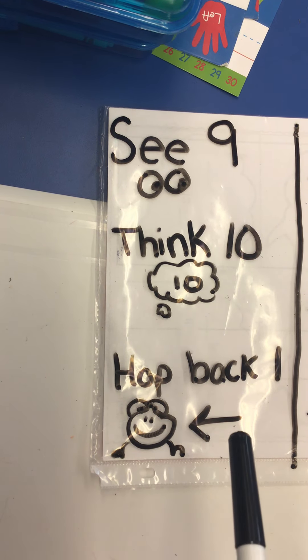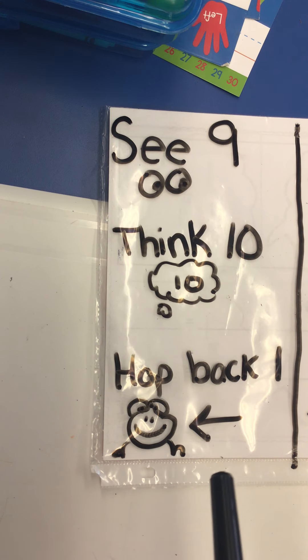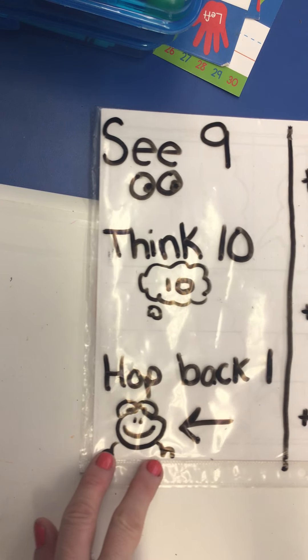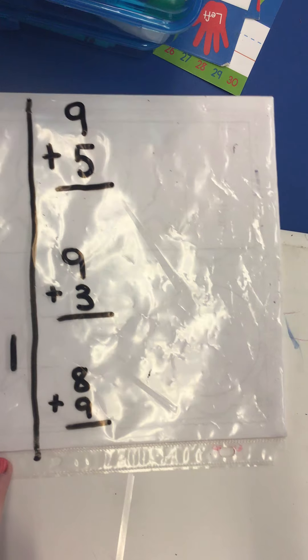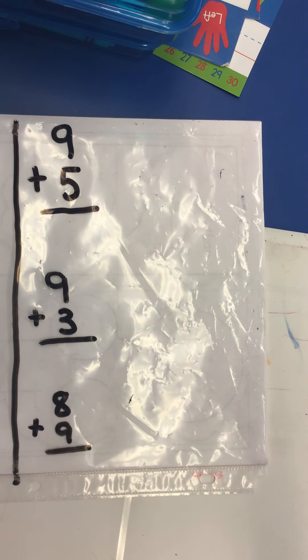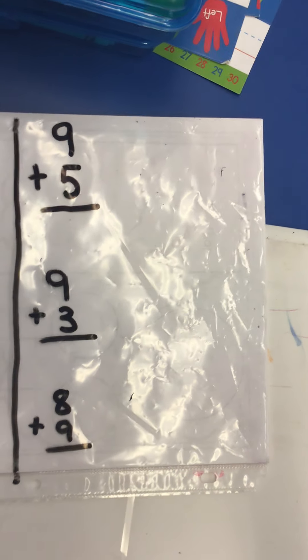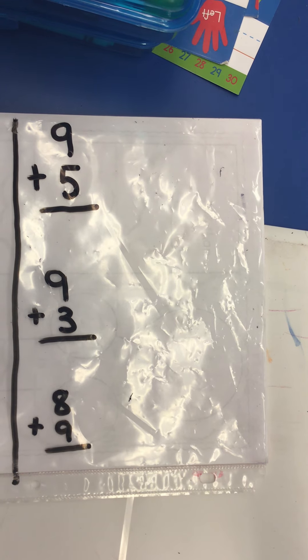So when you are adding any number plus nine, you can use this trick. It's the same trick. You're still making 10, but it's just a different way to look at it.